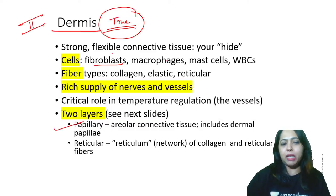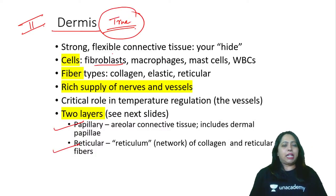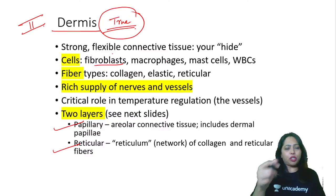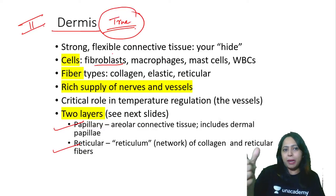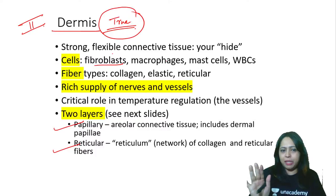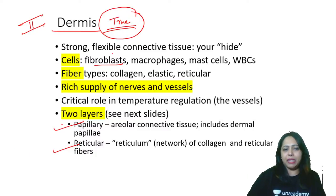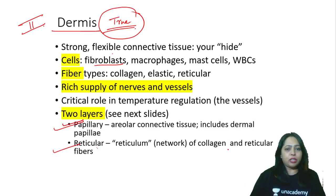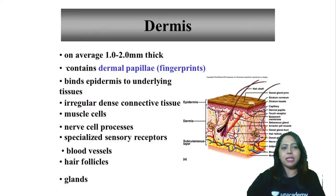Dermis has two layers: papillary and reticular. Dermal papillae are present, and that is what gives the impression on the surface of the skin — the basis for biometrics and fingerprints. Then there is the reticular layer, which is rich in collagen fibres and reticular fibres. The dermis is about one to two millimeters thick.